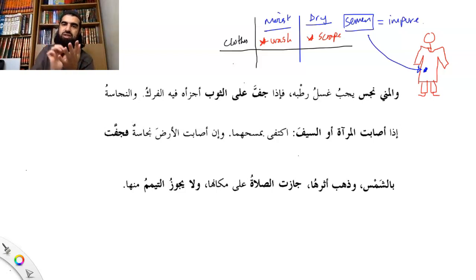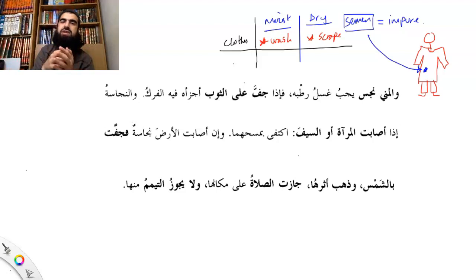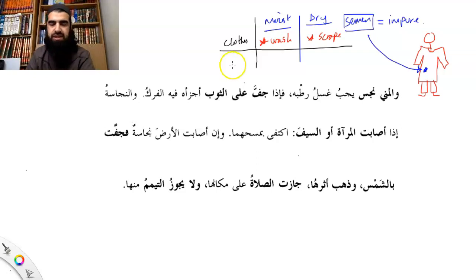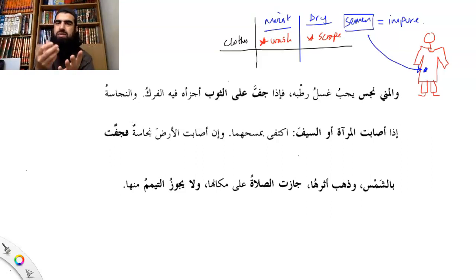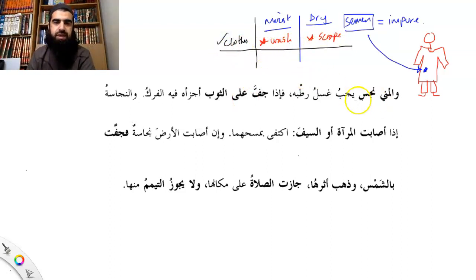Scraping it off is allowed because when semen becomes dry it becomes hard, and peeling it off achieves exactly the same thing as washing — that is, removal of the semen from the clothing. You can imagine it like snot from the nose: very sticky when moist, but when it dries it becomes hard and you can scrape it off with your fingernails. So this is why the Hanafis say: idha jaffa ala thawb, ajza'ahu farkuhu — scraping it off is permissible.